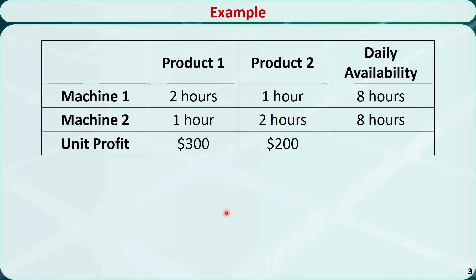Here is an example. Two machines are used to produce two types of products. A unit of product 1 requires 2 hours of processing time on machine 1 and 1 hour on machine 2. A unit of product 2 requires 1 hour on machine 1 and 2 hours on machine 2. Daily processing time available on each machine is 8 hours. Selling one unit of product 1 generates $300 net profit, and selling one unit of product 2 generates $200 net profit.